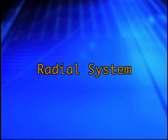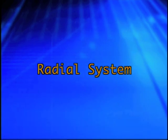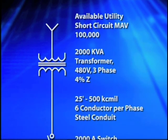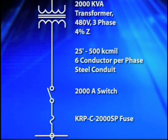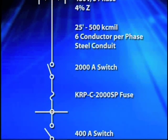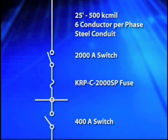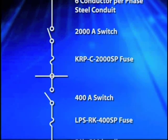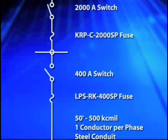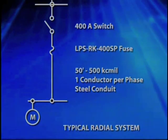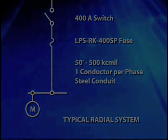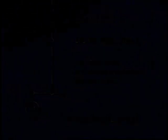A radial system consists of one direct path between the electrical source and the load or equipment. Note that in this example, a large distribution transformer is connected to a main switchboard 25 feet away. Downstream from the switchboard is a standard industrial motor. The local utility provides the short circuit current, while the transformer, cables, and switchboard fuses limit the amount of short circuit current reaching the motor.